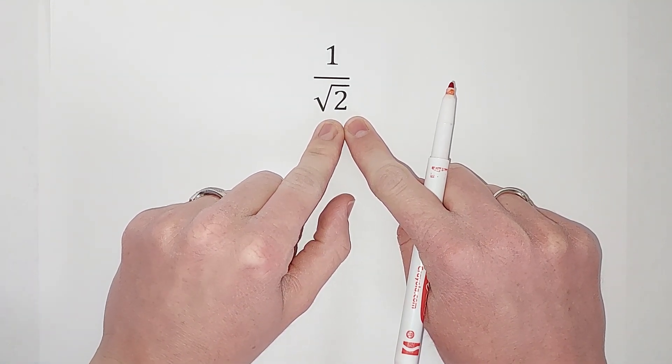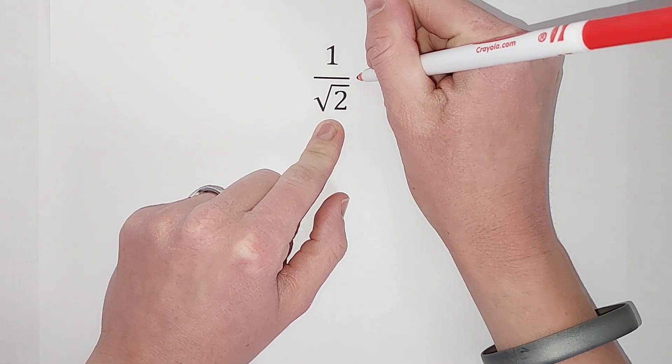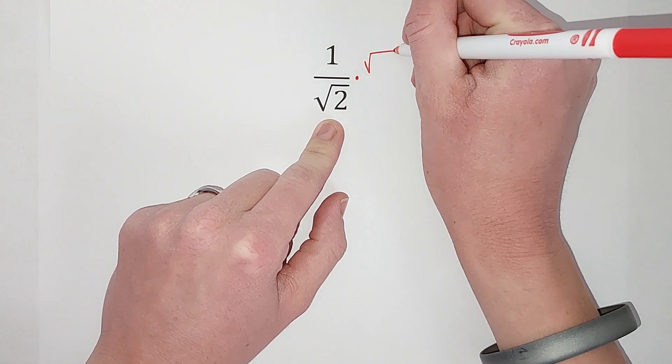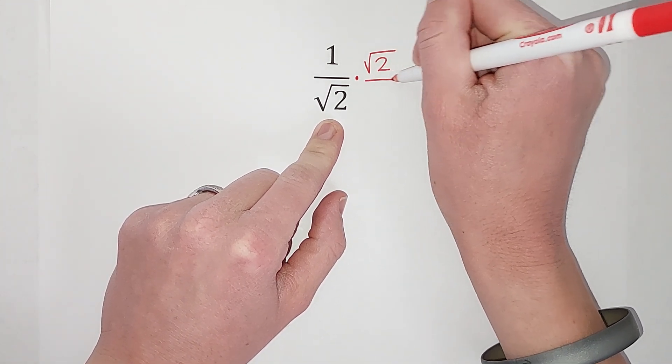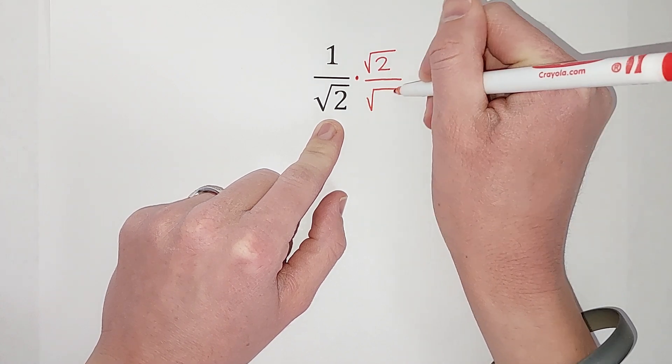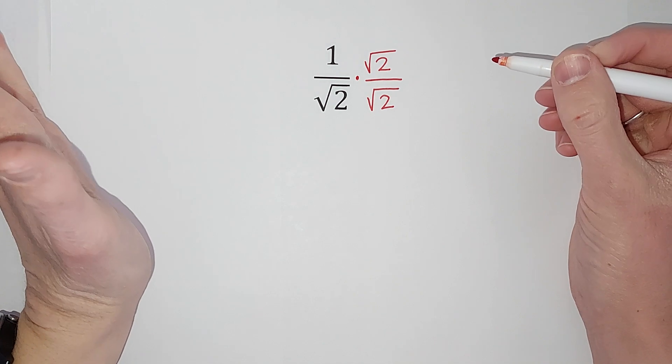And then what we're going to do - this might look like craziness, but hold on with me - we are going to multiply this fraction by the square root of two over the square root of two. First of all, why can I do that? It seems crazy, right? Well, anything over itself is equal to one.